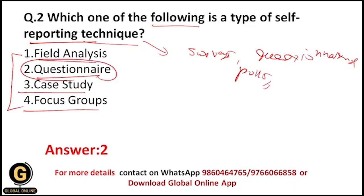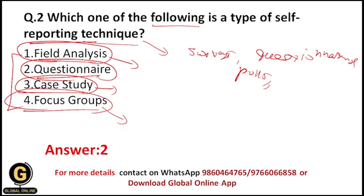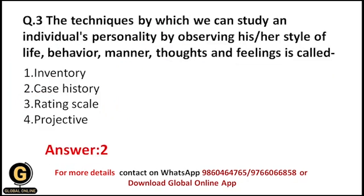The other options — field analysis, case study, and focus groups — are data collection methods but not types of self-reporting technique. In field analysis, the researcher wants to understand human behavior in a natural environment. In case study, we study in-depth information of a single person. In focus groups, there is a homogeneous group with participants sharing common characteristics. That is why the correct answer is questionnaire.